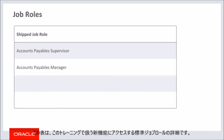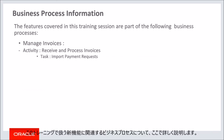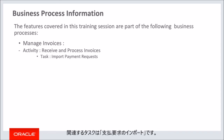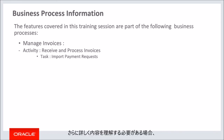This table details the shift job roles that will access the new capabilities covered in this training. The business processes associated with the new capabilities covered in this training are detailed here. The high-level business process is manage invoices with activity receive and process invoices. The associated task is import payment requests. This concludes this presentation. Thank you for listening. You can easily pause and rewind any of these slides if you require additional time to take in the detail.